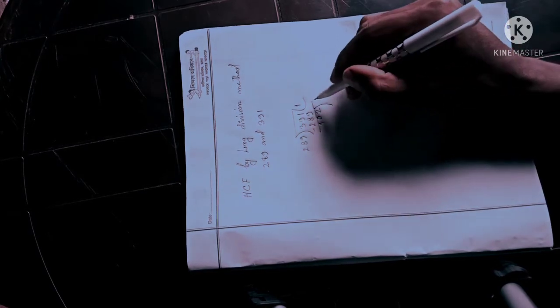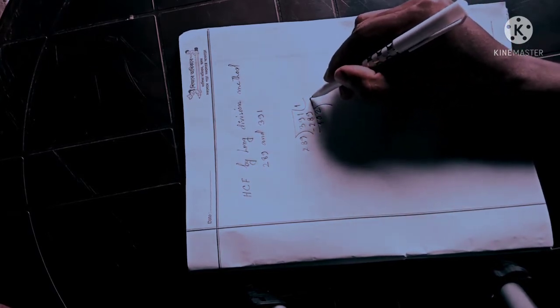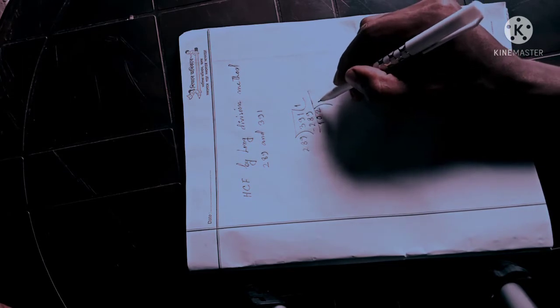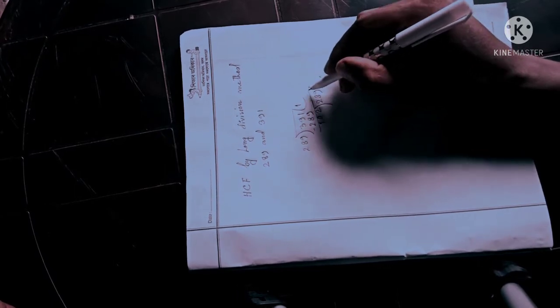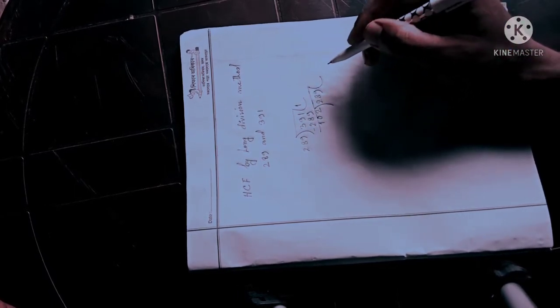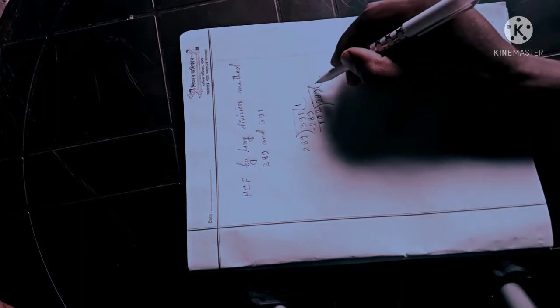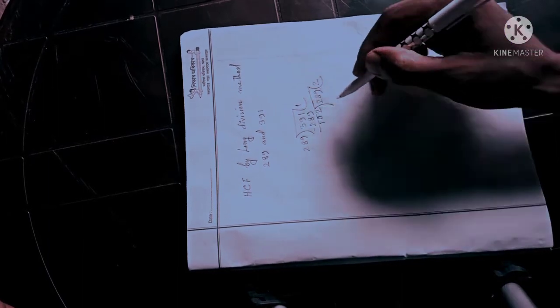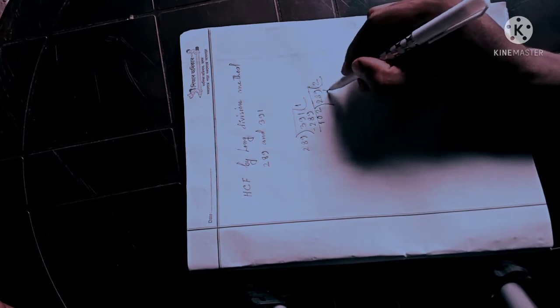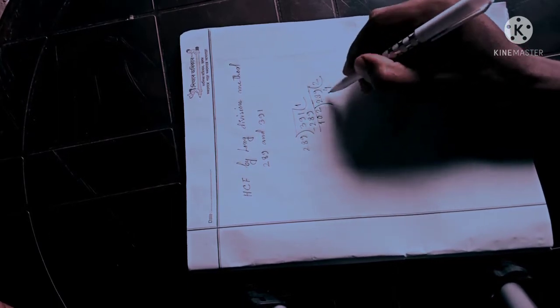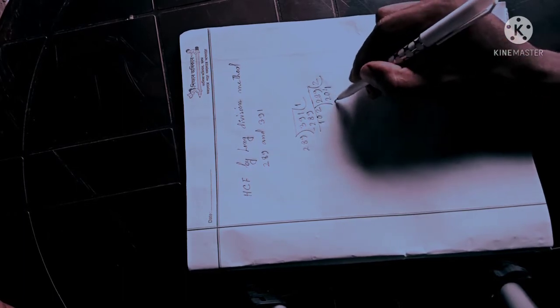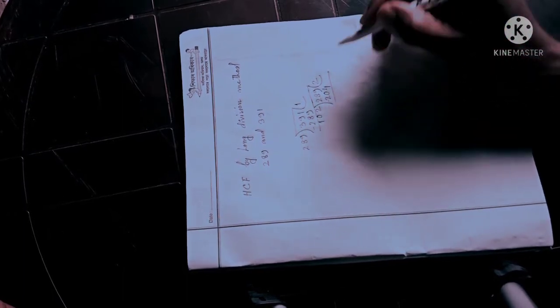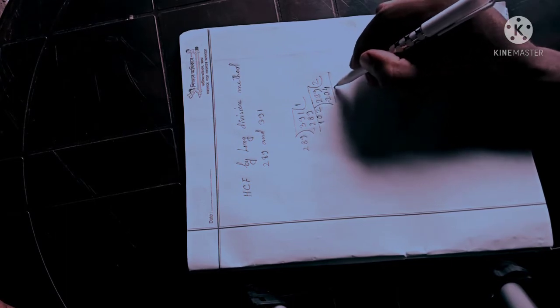Now 102 divided by 289. We can go 2 times. 102 times 2 is 204. 2 times 2 is 4, 2 times 0 is 0, and 2 times 1 is 2. Subtract. 9 minus 4 is 5.